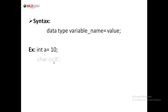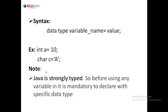For one more example: char c equals to 'a' — this 'a' is assigned to c by the assignment operator. Java is a strongly typed programming language, so before using any variable it is mandatory to declare that variable with a specific data type.